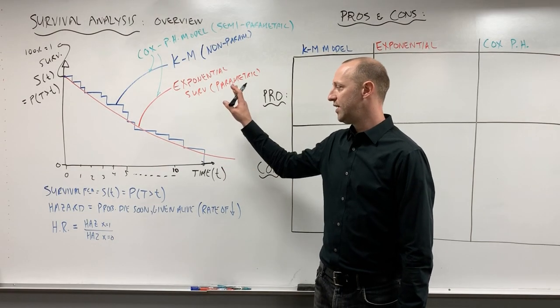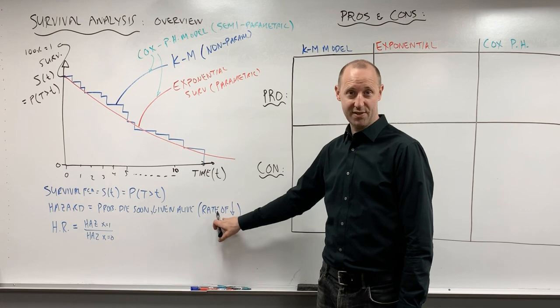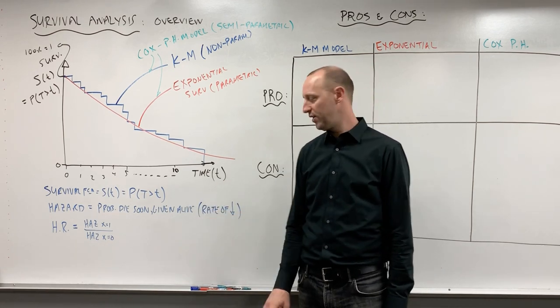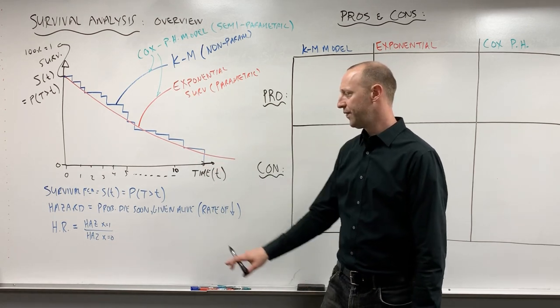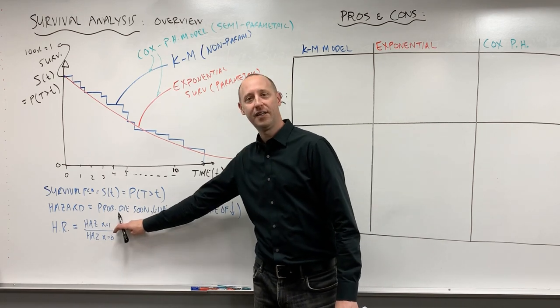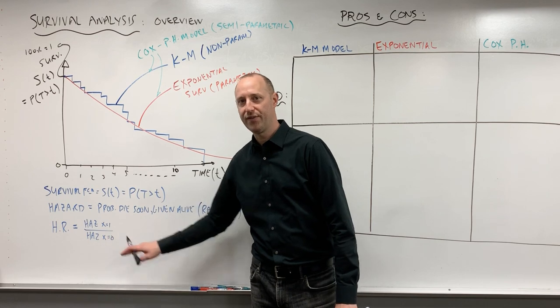We've introduced the idea of what is the survival function, what is the hazard - the probability of dying in an instant given that you're alive. We can think of it as the rate of decrease on these curves, as well as the hazard ratio, the risk of dying in an instant for one group relative to the other, or exposed relative to unexposed.